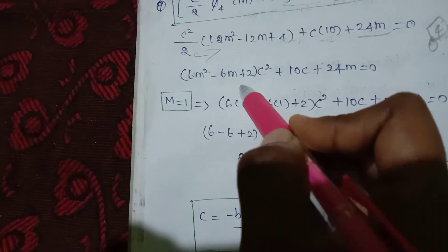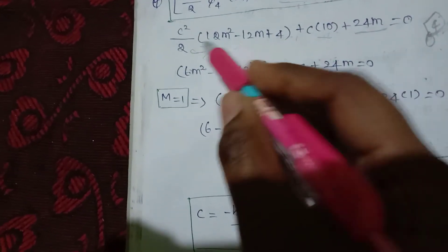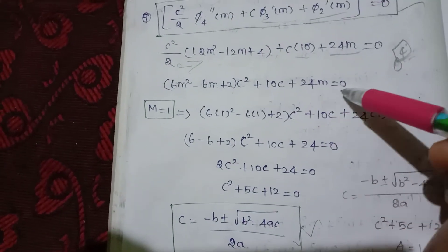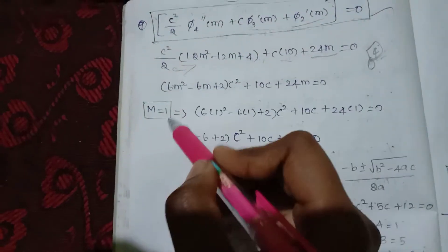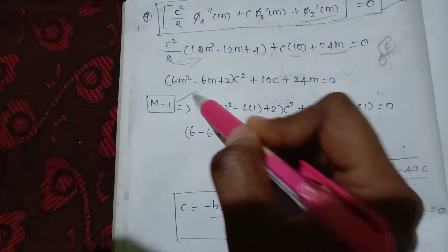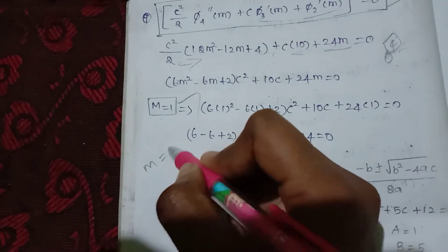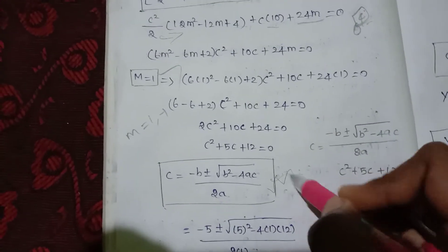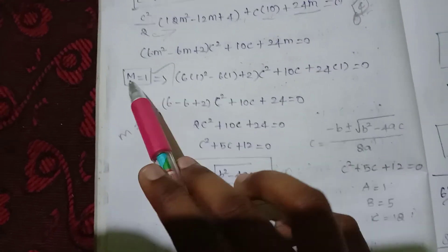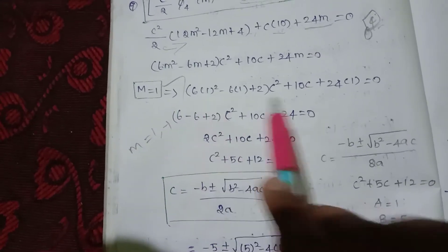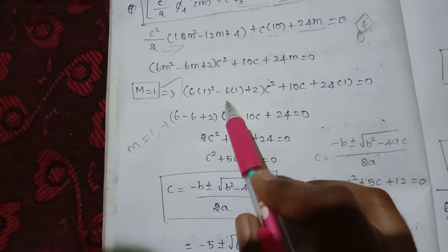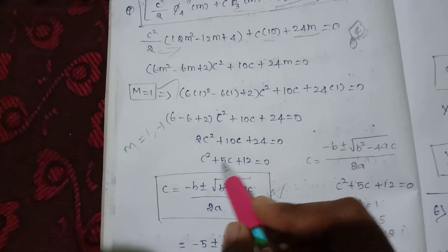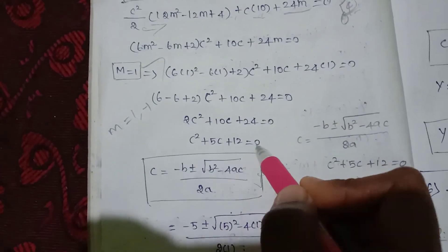6m squared minus 6m plus 2 times c squared plus 10c plus 24m is equal to 0. We have the m value, that is 1. Substituting m equal to 1 gives c squared plus 5c plus 12 is equal to 0.